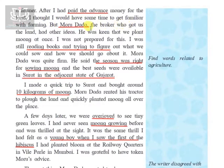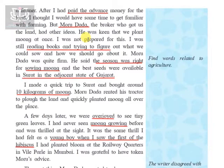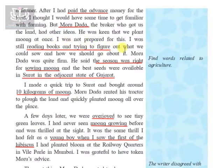But Morudada, the broker who got them the land, had other ideas. He was keen that they plant moong at once. The writer was not prepared — he was still reading books and trying to figure out what to grow and how to go about it. Morudada advised that he should plant moong because he knew it was the best season. The writer was still figuring things out — anyone new tries to read books and find information before doing something practically.